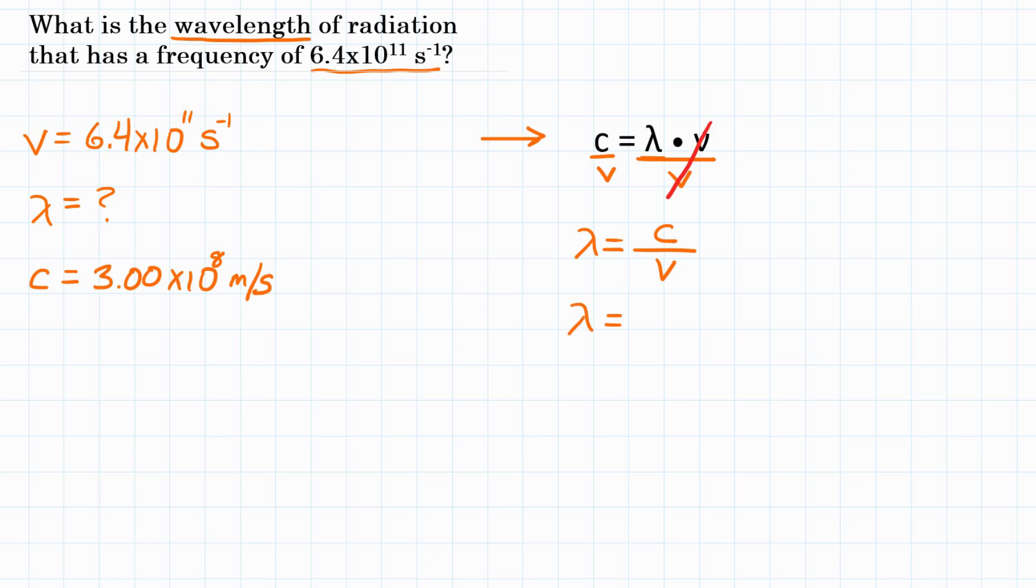Again, wavelength is going to be equal to the speed of light. That is 3.00 times 10 to the 8th meters per second, divided by frequency. And the problem gave us 6.4 times 10 to the 11th seconds to the negative 1 power.